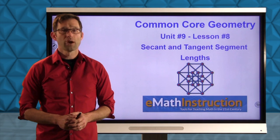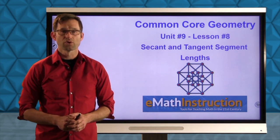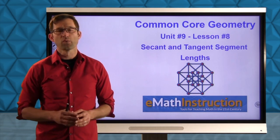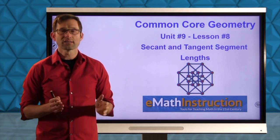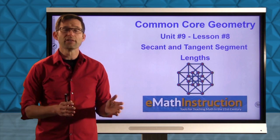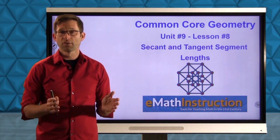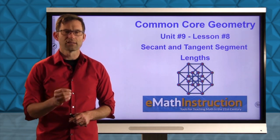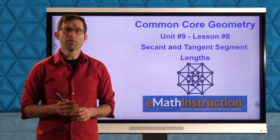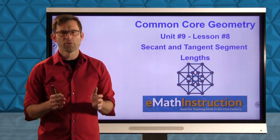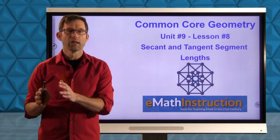Hello and welcome to another Common Core Geometry video by EMath Instruction. My name is Kirk Weiler and today we'll be doing unit number nine, lesson number eight, on secant and tangent segment lengths. For the last few lessons we've been concentrating on the angles that secants and tangents make with one another and make exterior to the circle and how they relate to those arcs that the secants and tangents intercept. Today though we're going to be concentrating on the lengths of secants and tangents and how they relate to each other. Thankfully there's basically one theorem that encompasses all of this material, so we're going to look at that in the first exercise, then formally introduce it, and eventually prove it.